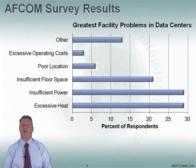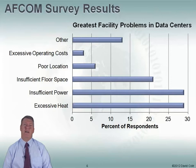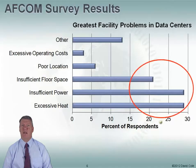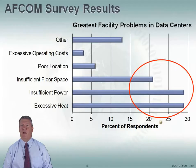AFCOM does a survey at their shows — usually the spring show is in Las Vegas and the fall show is on the east coast or Midwest. They ask at every show: what are the greatest facility problems in data centers? And you'll see it's always space, power, and cooling. Sometimes cooling gets the lead, sometimes power's in the lead, sometimes space edges up. But it's always those three big things: space, power, and cooling.